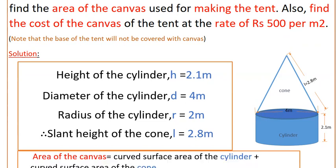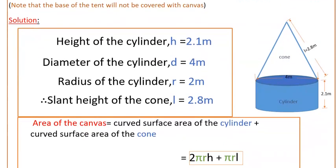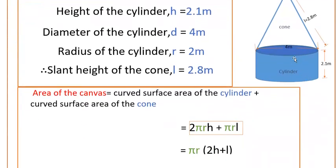So here we have to find the area of the canvas equals curved surface area of the cylinder plus curved surface area of the cone. So curved surface area of the cylinder is 2πrh plus curved surface area of the cone is πrl. So here πr is common, take out πr into 2h plus l.